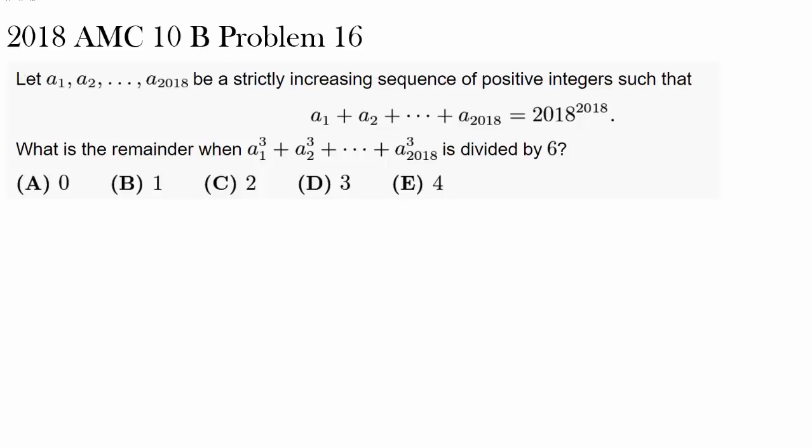Let A sub 1, A sub 2, all the way to A sub 2018 be a strictly increasing sequence of positive integers such that all of them are going to add up to 2018 to the 2018th power. That's a very large number. And we wish to find the remainder when A sub 1 cubed plus A sub 2 cubed all the way to plus A sub 2018 cubed is divided by 6. This question is crazy. We have this constraint that all of the numbers has to add up to this monstrously large 2018 to the 2018th power, and now they want us to compute something that's going to be even larger, and they want us to divide it by 6 and find a remainder. Obviously trying to come up with the numbers and trying to do it by hand is not going to be the best way.